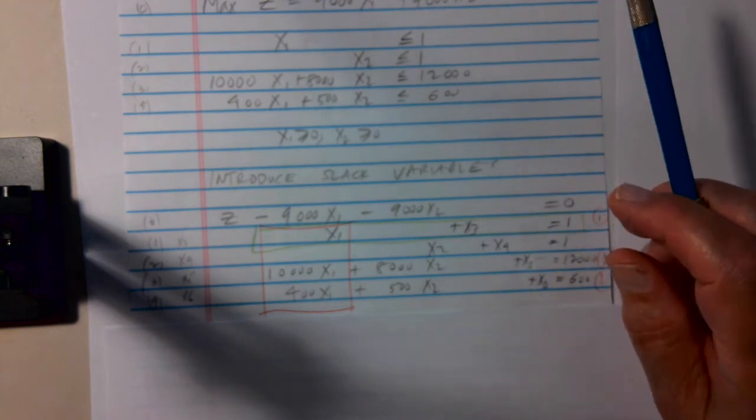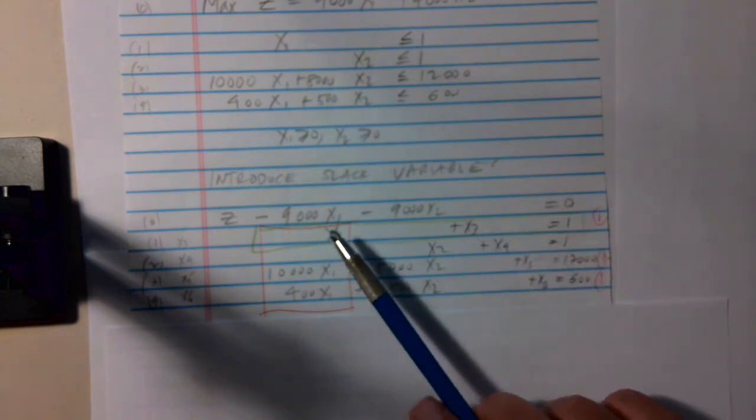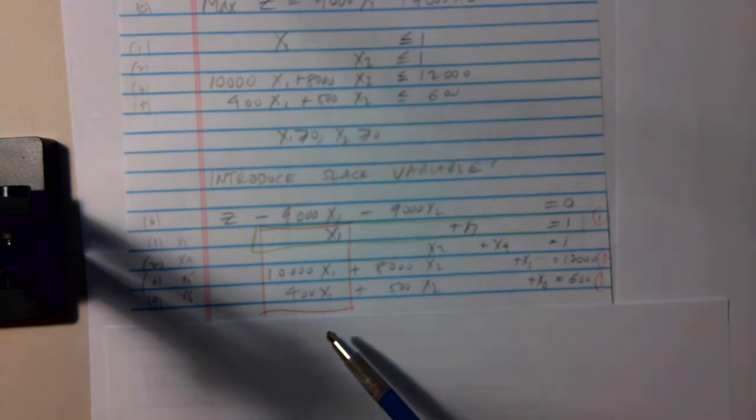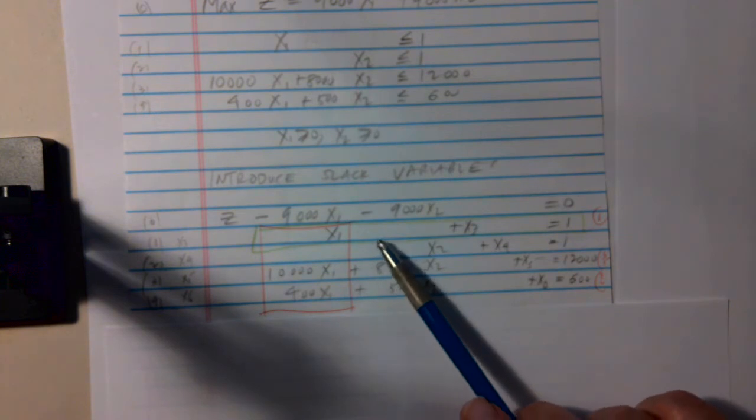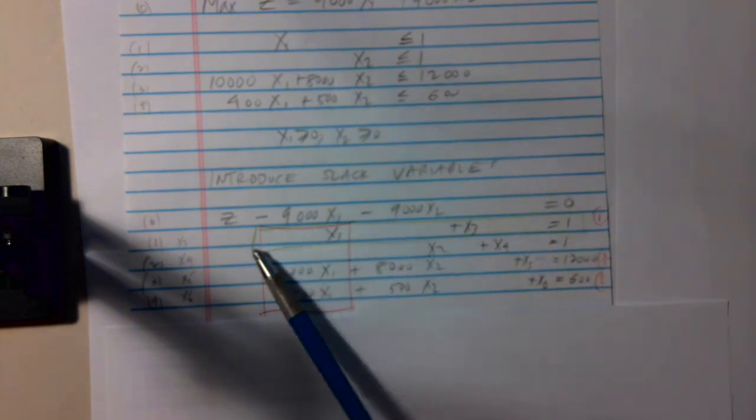Again, this is the problem with the inequalities. When we introduce the slack variables, we get this. And we also write Z equal to this in the form Z minus the right-hand side equals 0. And we start by having X1 and X2 be our non-basic variables, and X3, X4, X5, and X6, the basic variables. But of course, if X1 and X2 are 0, Z is 0.